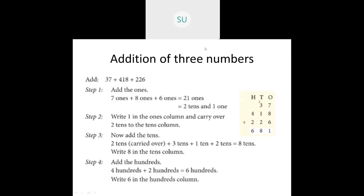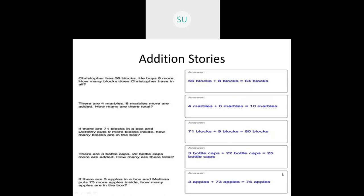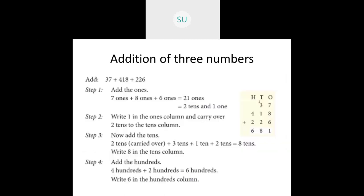So moving on to today's topic. In today's class, we'll be studying addition of 3 numbers. So far you added only 2 numbers. Now what we'll be doing is seeing how to add 3 numbers. Here, what is the example they've given? Add 37 plus 418 plus 226. So first, arrange these numbers into columns like this.